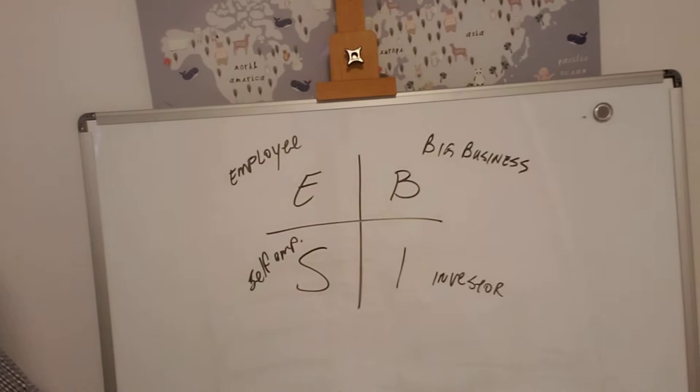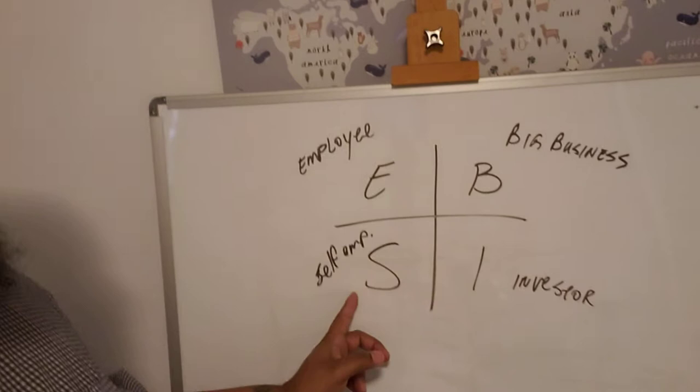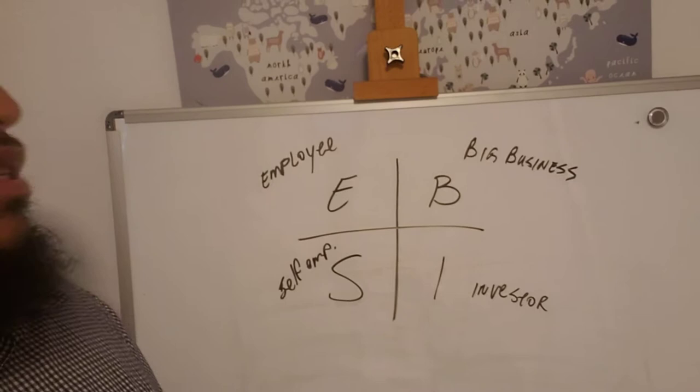So, Cash Flow Quadrant. Look right here. Keep it real simple. We got E, S, B, and I. Those are the four quadrants. E stands for employee, S stands for self-employed, or maybe a specialist. B for big business — that's when you've got maybe 500 or more employees, maybe a big corporation. And we got I for investor.